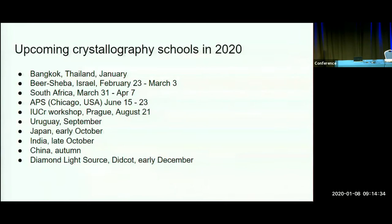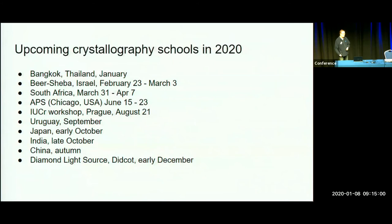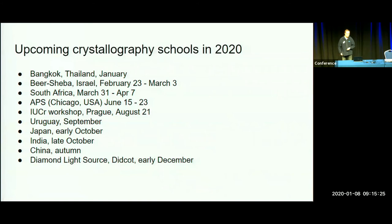The Thailand workshop is closed for registration, but the Israel workshop is open. There will be another workshop in South Africa, and every year we have one at APS in the USA. There will be a workshop at the IUCr conference in Prague, one in South America — this year in Uruguay in September — and three in Asia: Japan, India, and China. Every December we also hold a workshop at Diamond Light Source in Didcot, where the CCP4 core group is based.